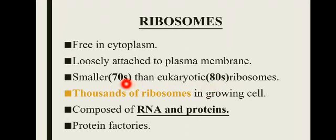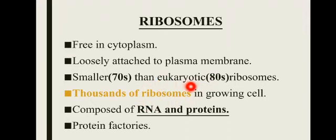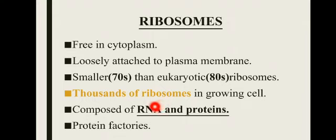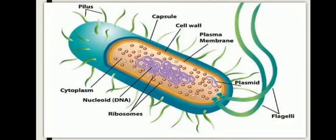جو growing cells ہوتے ہیں ان کے اندر thousands of ribosomes موجود ہوتے ہیں۔ Ribosomes کی chemical composition دیکھیں تو یہ RNA اور proteins دونوں سے مل کر بنتے ہیں۔ ان کا کام basically protein synthesis کا ہوتا ہے، جس کی وجہ سے ribosomes کو protein factory کا نام بھی دیا جاتا ہے۔